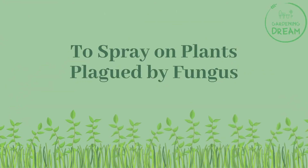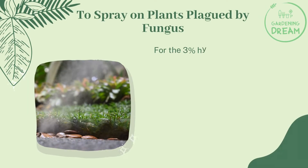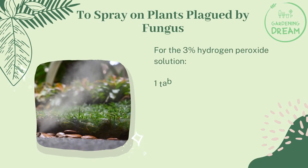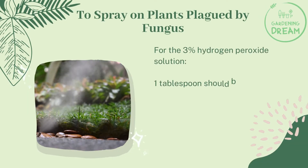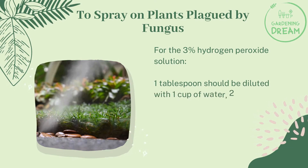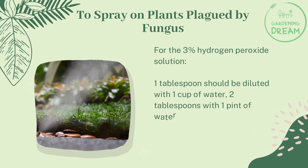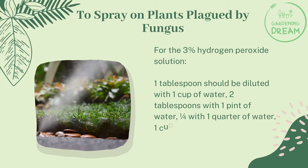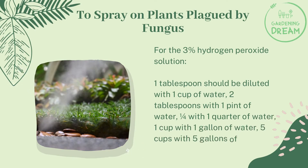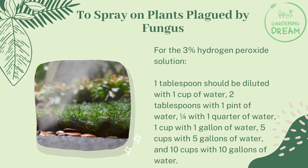To spray on plants plagued by fungus, using the 3% hydrogen peroxide solution: one tablespoon should be diluted with one cup of water; two tablespoons with one pint of water; one quarter cup with one quart of water; one cup with one gallon of water; five cups with five gallons of water; and ten cups with ten gallons of water.